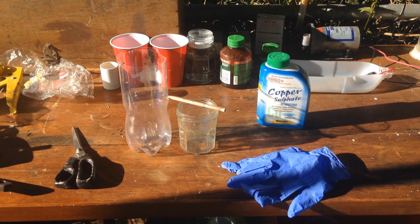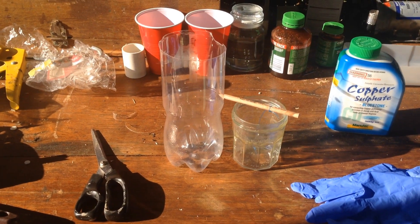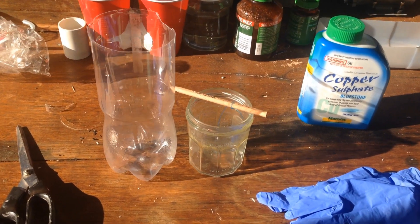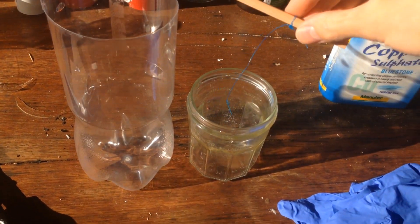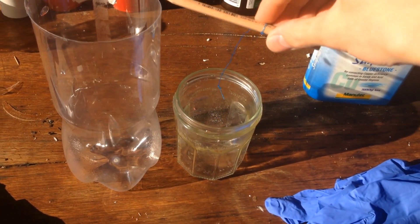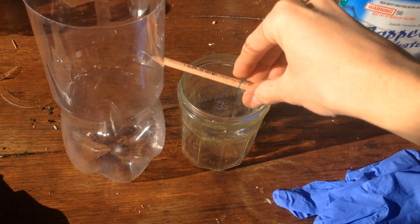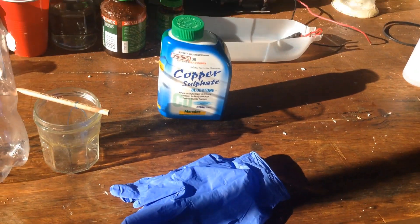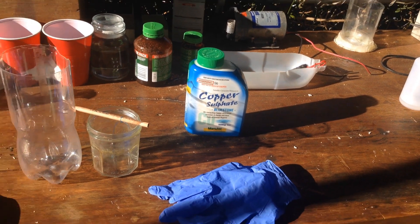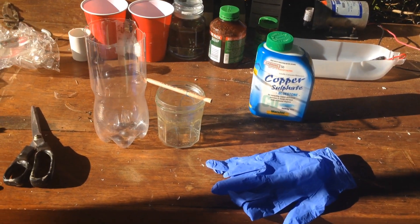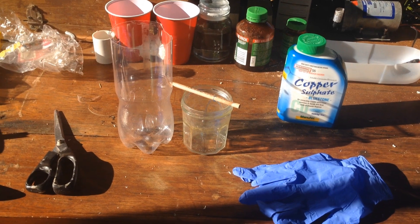So the things you're going to need for this experiment are: two containers, one preferably being a glass jar, a pencil and some fishing line to suspend your crystal in the copper sulfate solution, some gloves, some copper sulfate, and some boiling water, which I don't have yet but I'll get it when we need it.